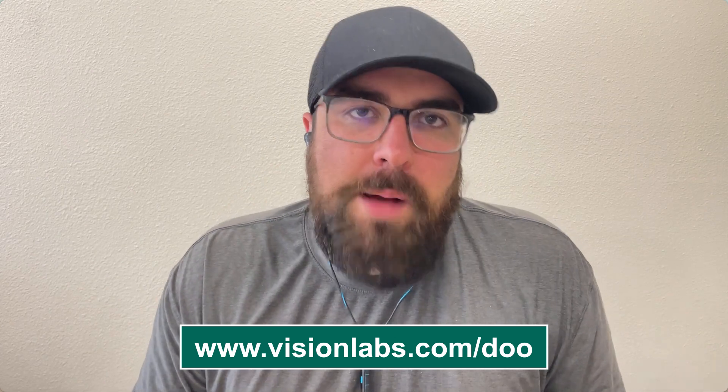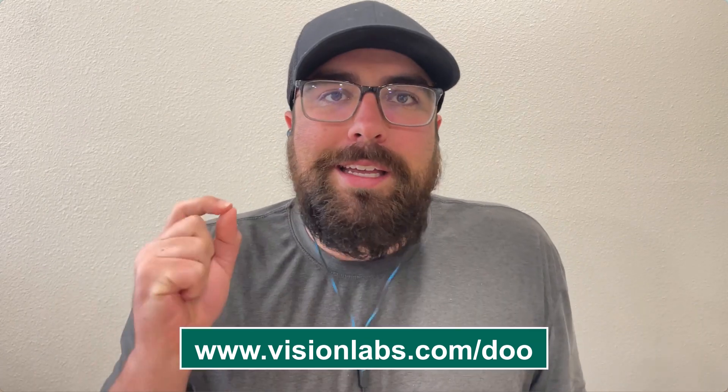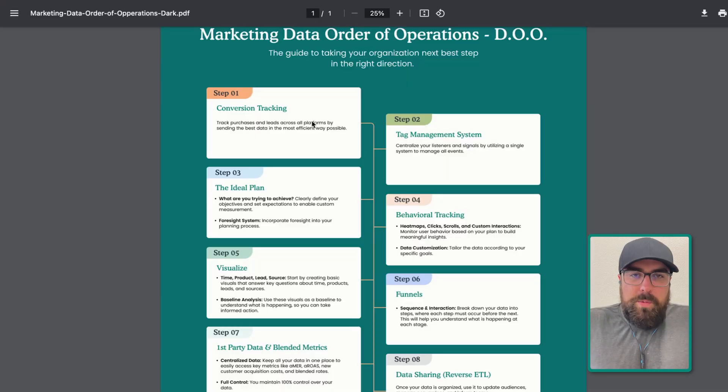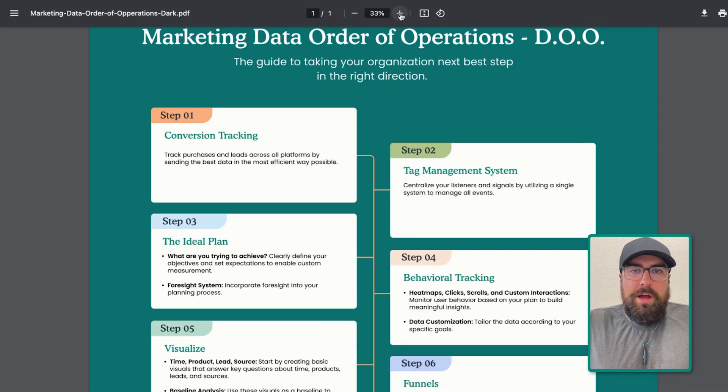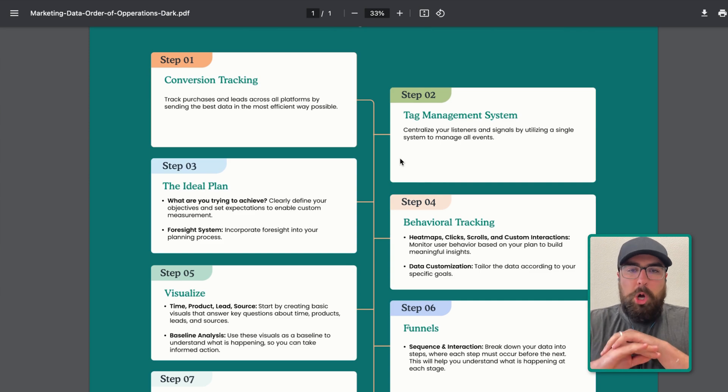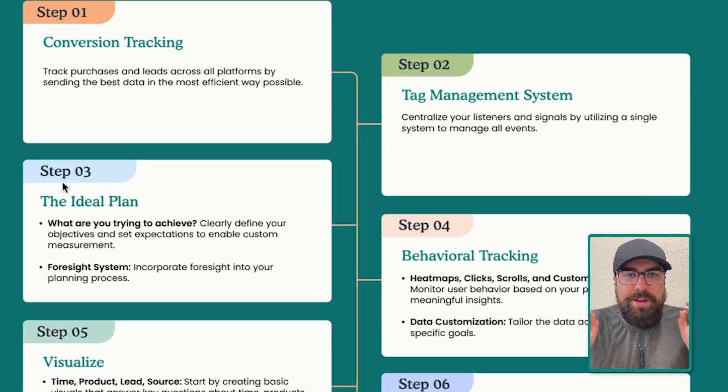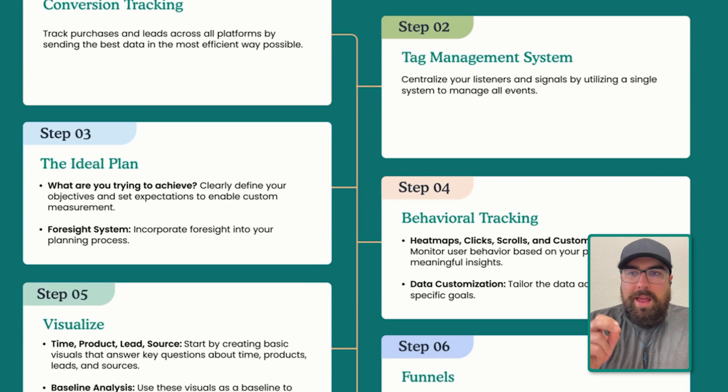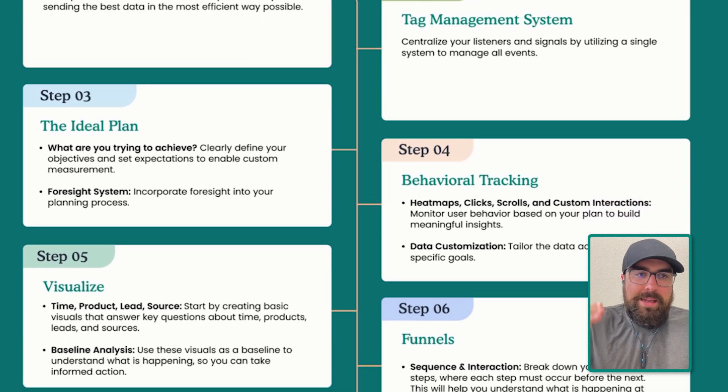I'm going to show you right now exactly what it is, how it works, how you can apply it to your organization, and then I'm going to show you the rules of engagement. In order to run through the Data Order of Operations, you have to understand what rules we are going by. Here we are looking at the screen right now. We have these steps in order — there are 10 steps. Do not get overwhelmed. We want to do all of these at some level, and then level them up again and again.